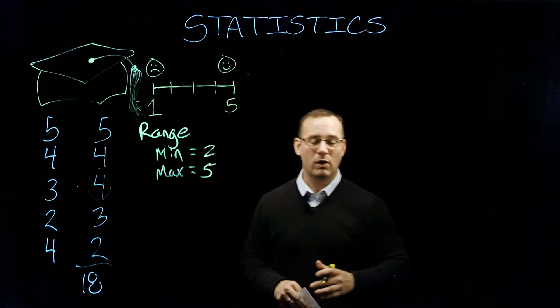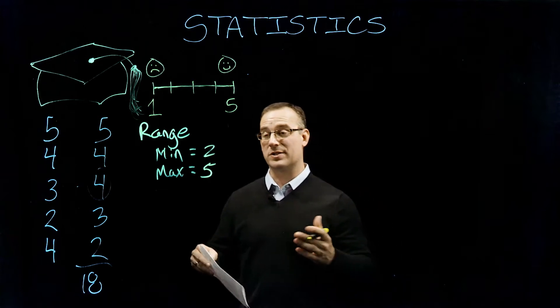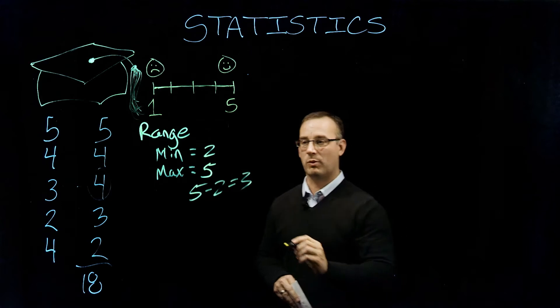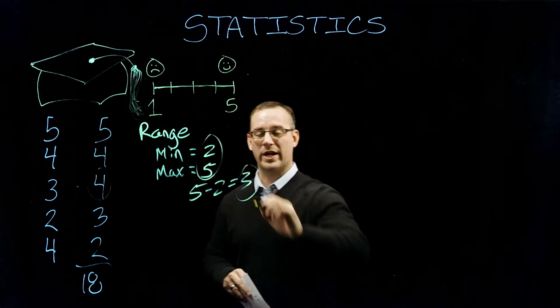So five and two, or you can report range as the difference between the two of those. So in essence, five minus two is three, you could report the range either way here.